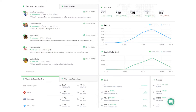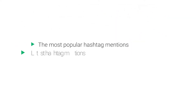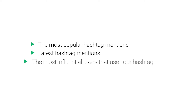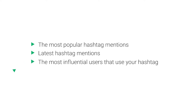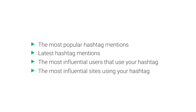The Summary tab is where you can see the summary of the most important data about your hashtags, such as the most popular hashtag mentions, latest hashtag mentions, the most influential users that use your hashtag, the most influential sites that use your hashtag, and more. If you want to take an even closer look at the data, then you will find what you're looking for in the Analysis tab.